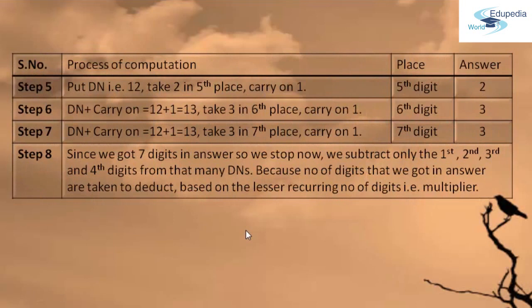In Step 5, we take DN that is 12. It is a two-digit number, so we take 2 in the fifth place from the right and the digit in the tens place — 1 — as carry-on. In Step 6, we add DN with the carry-on: 12 plus 1 gives 13. We take 3 in the sixth place and 1 as carry-on. In Step 7, again 12 plus 1 gives 13. We take 3 in the seventh place and carry on 1.